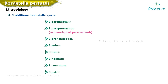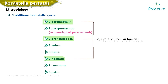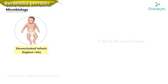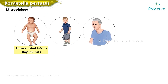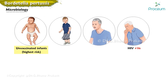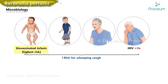Three of these species — Bordetella parapertussis, Bordetella bronchiseptica, and Bordetella holmsii — can cause respiratory illness in humans. Unvaccinated infants are at the highest risk of being infected, but children, elderly people, and immunocompromised patients are also at high risk for whooping cough.